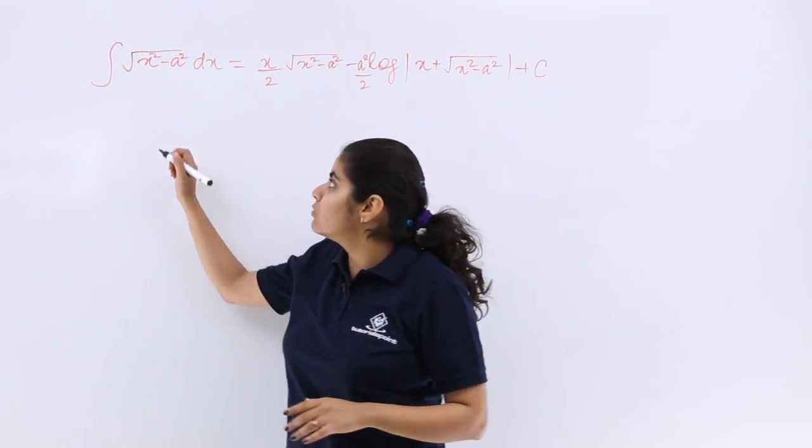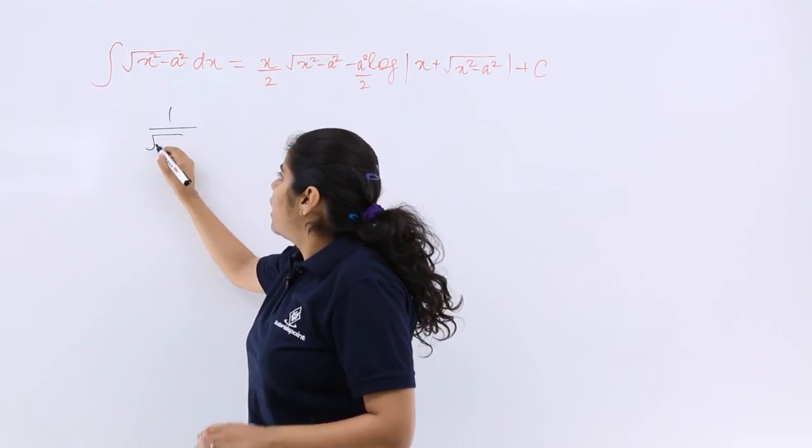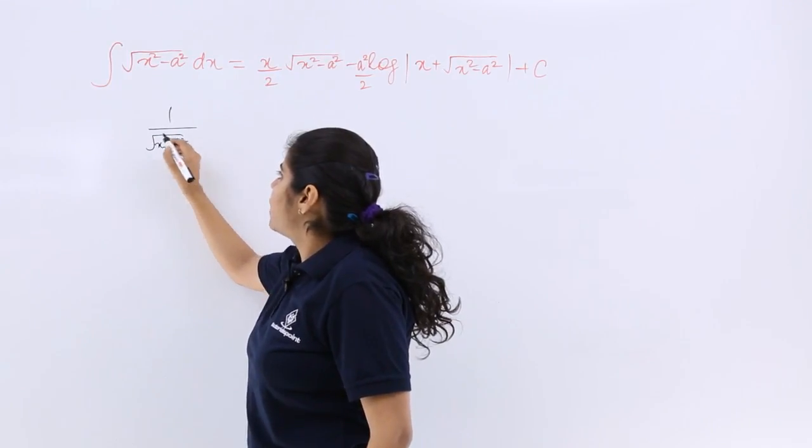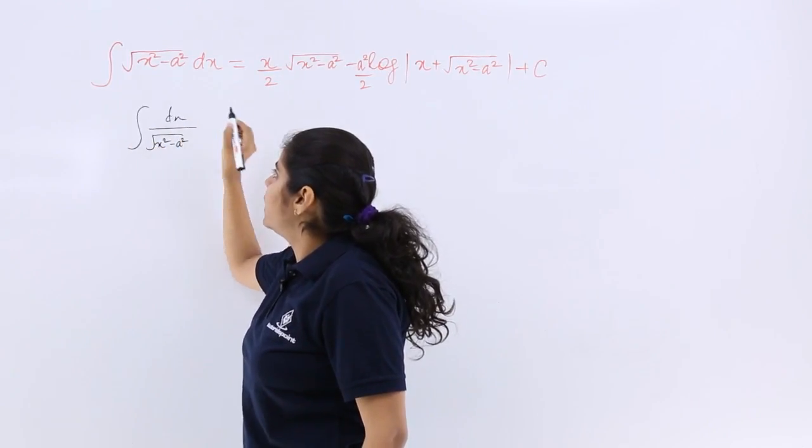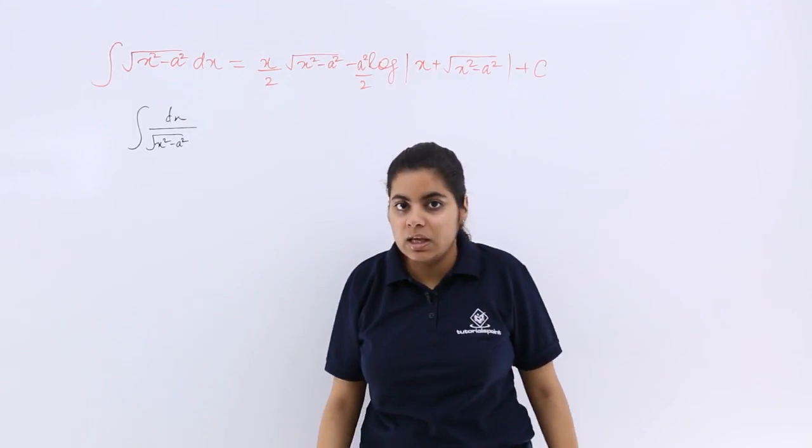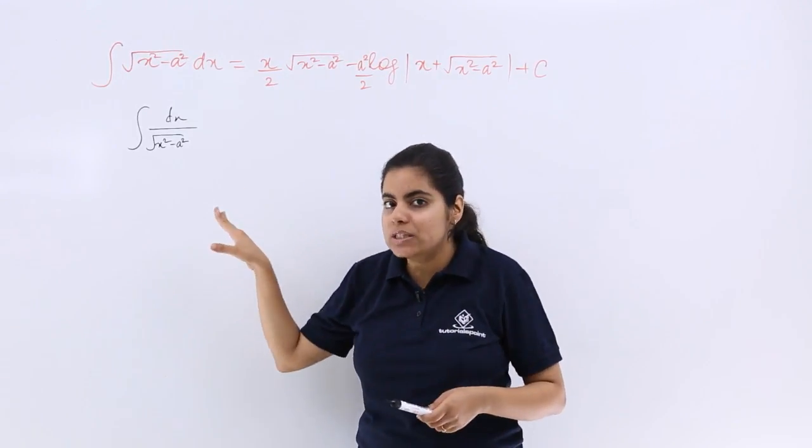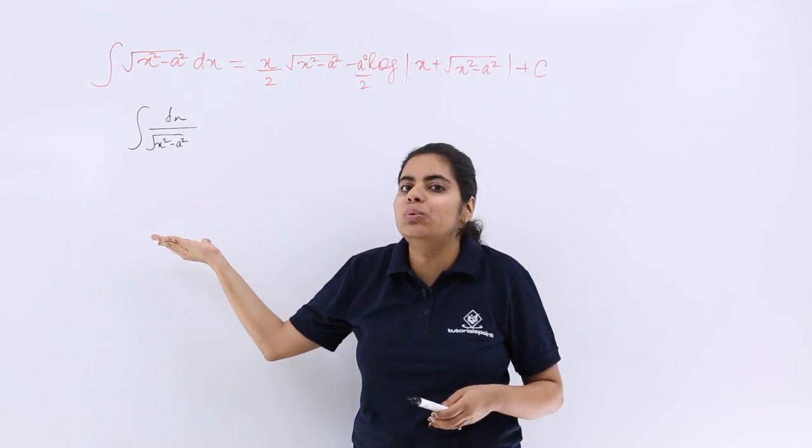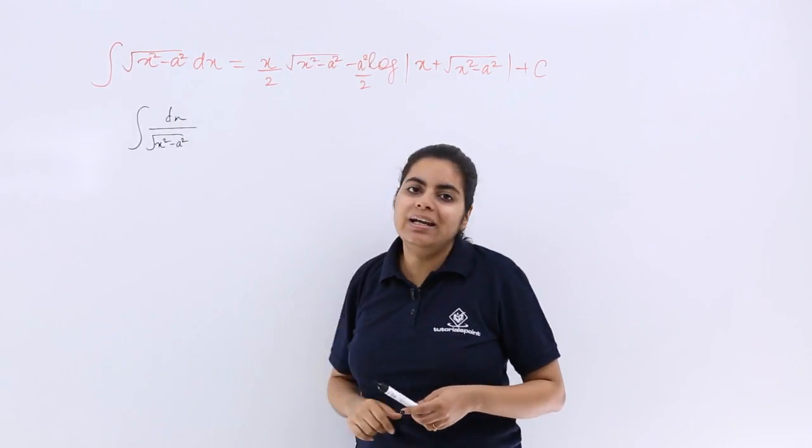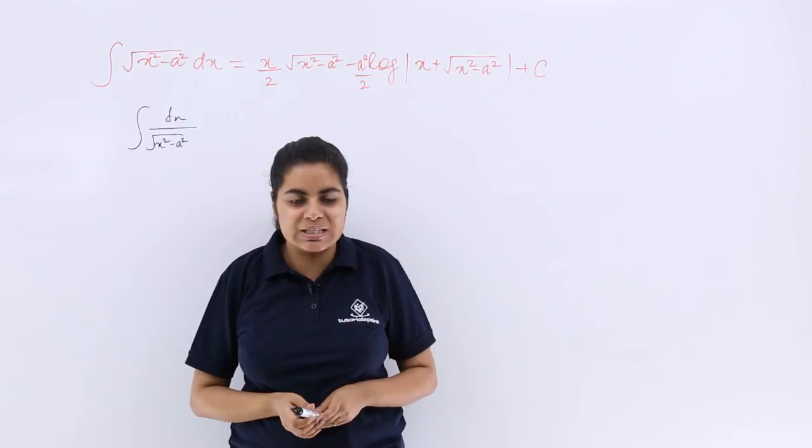You do not have to get confused with this formula and the formula for 1/√(x² - a²) with only dx in the numerator. That formula was different - the denominator had √(x² - a²). Here, the numerator has √(x² - a²).